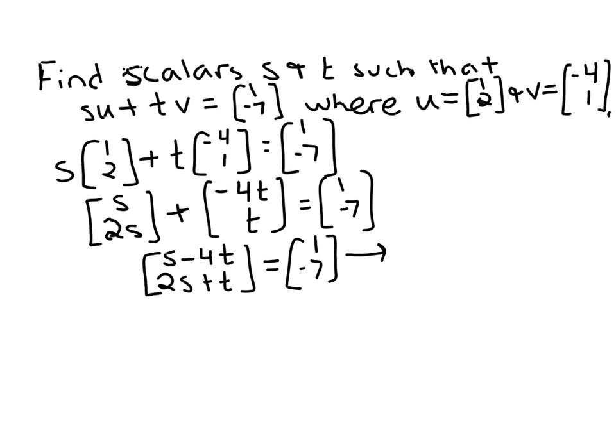From here, we could write a system of equations. s minus 4t equals 1, and 2s plus t equals negative 7.